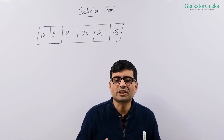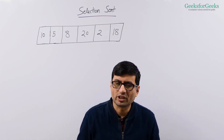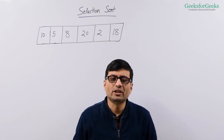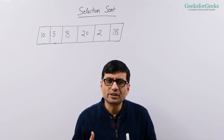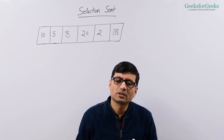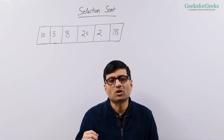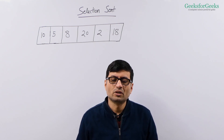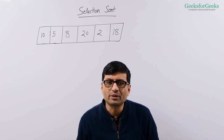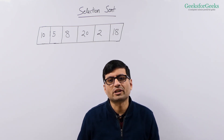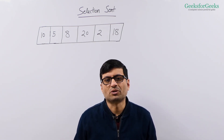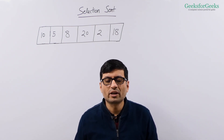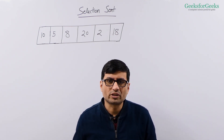Let us now understand the basic idea of selection sort algorithm with this example. We are going to sort this array in increasing order. The basic idea is: we find out the minimum element and put it at the first position. Then we find out the second minimum element and put it at the second position. Then we find out the third minimum element and put it at the third position. We keep doing it, and at the end we have the array sorted.